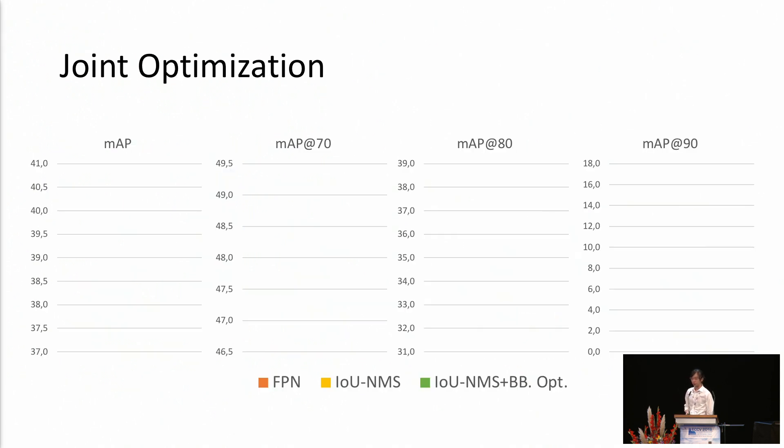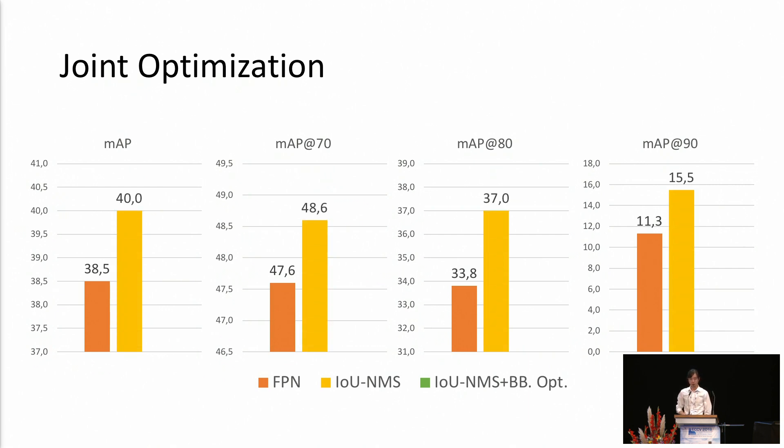Note that the IOU prediction is just one more branch added to the R-CNN framework, so it can be jointly optimized with almost any Faster-than-R-CNN-based detection pipeline. Taking the FPN as an example, starting from this baseline, adding the joint training and the IOU-guided NMS, we improved overall AP by 1.5. And also, bringing everything together, we find our algorithm reached a comparable result with all state-of-the-art object detectors.